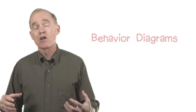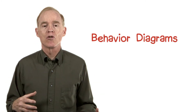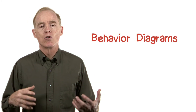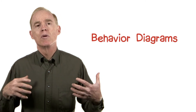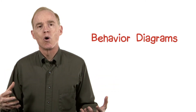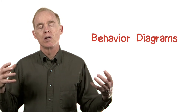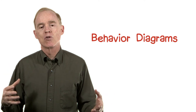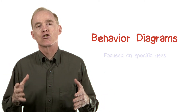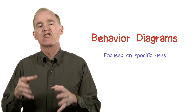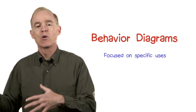The second main category of UML diagrams is the behavioral diagrams. In contrast with the structural diagrams, which describe the system as a whole, the behavioral diagrams are concerned with a particular instance of behavior of that system.